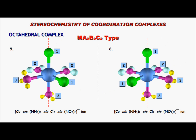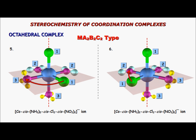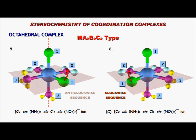The other four ligands form a plane. Spot the ligand with the lowest CIP number in this plane and draw two sequences — one clockwise and one anticlockwise — from this ligand. See which sequence falls on the ligand with the lower CIP number; take that sequence and discard the other. A clockwise sequence indicates a C isomer, and an anticlockwise sequence indicates an A isomer.